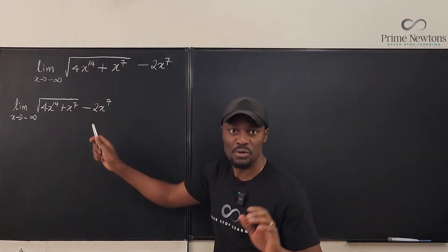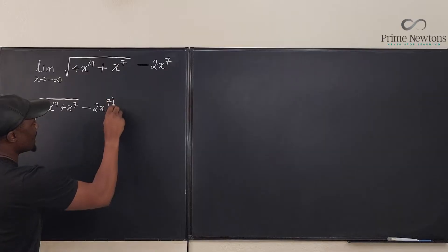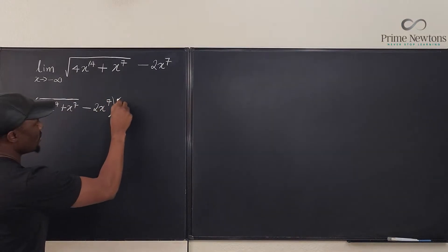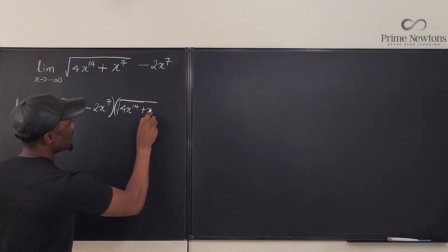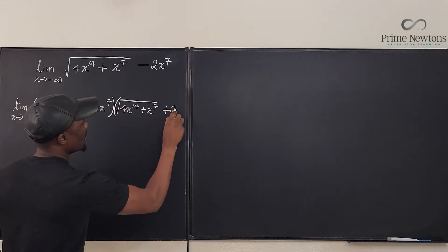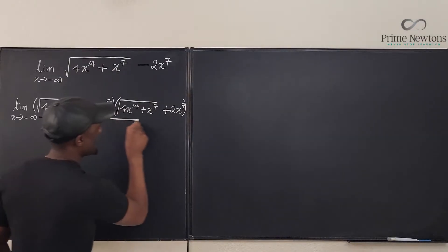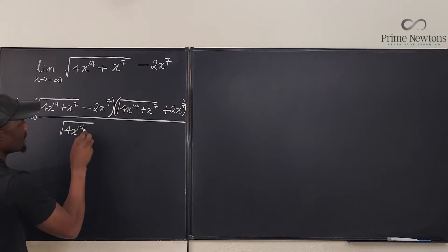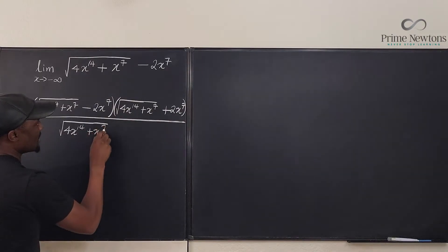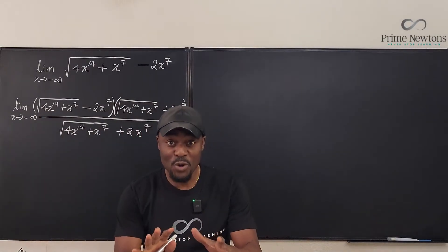We're going to multiply the function by its conjugate, which is simply changing the minus sign to a plus. So we multiply by the conjugate: the square root of 4x¹⁴ plus x⁷, plus 2x⁷ — and then we divide by that same expression: the square root of 4x¹⁴ plus x⁷, plus 2x⁷.